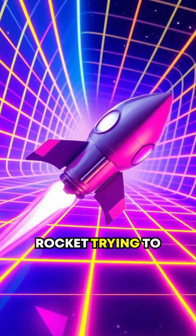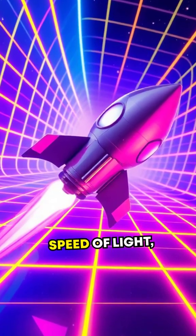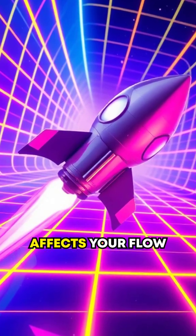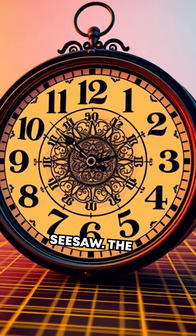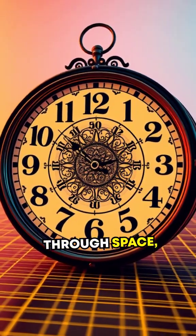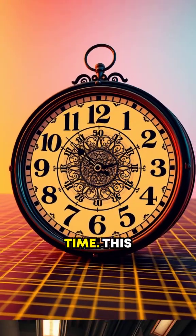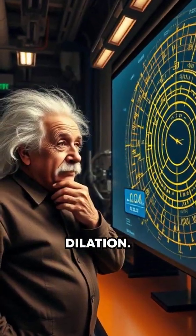let's say in a rocket trying to hit 99% of the speed of light, your movement affects your flow through time. Think of it like a seesaw. The faster you move through space, the slower you move through time. This phenomenon is called time dilation.